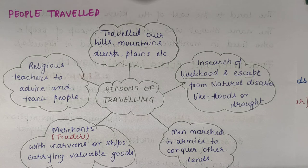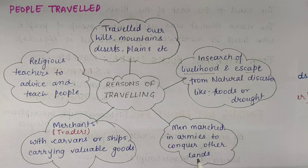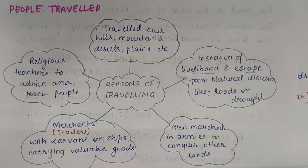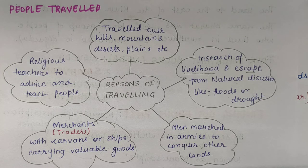So they travelled from one place to another in search of occupation so that they could work and continue with their families. Now, men marched in armies to conquer other lands. Kings wanted to grab or capture other areas — woh us area pe kabza karna chahte the — toh woh apni armies ko leke jaate the.